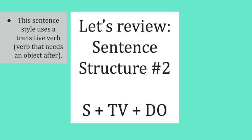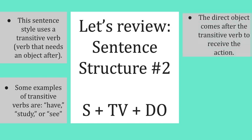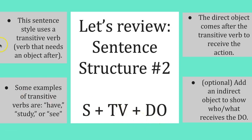This sentence structure is used with transitive verbs because we need a direct object after. Some examples of transitive verbs are 'have', 'study', or 'see'. Remember, you use a direct object after the transitive verb to show who or what received the action. If you want, you can add an indirect object to show who or what received the direct object — put the indirect object after the verb and before the direct object. Thanks for watching — I hope this video helps you use the sentence structure correctly.